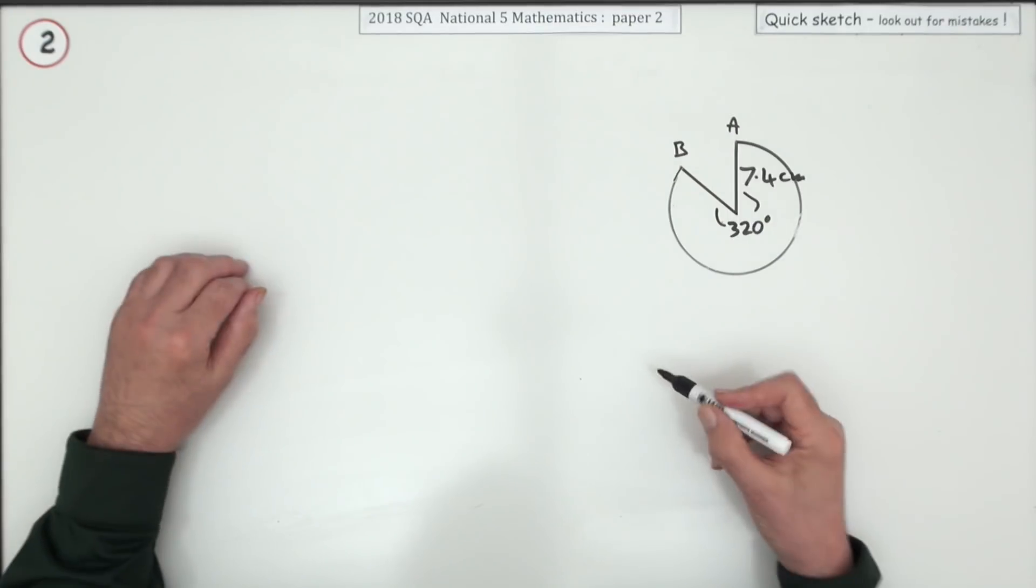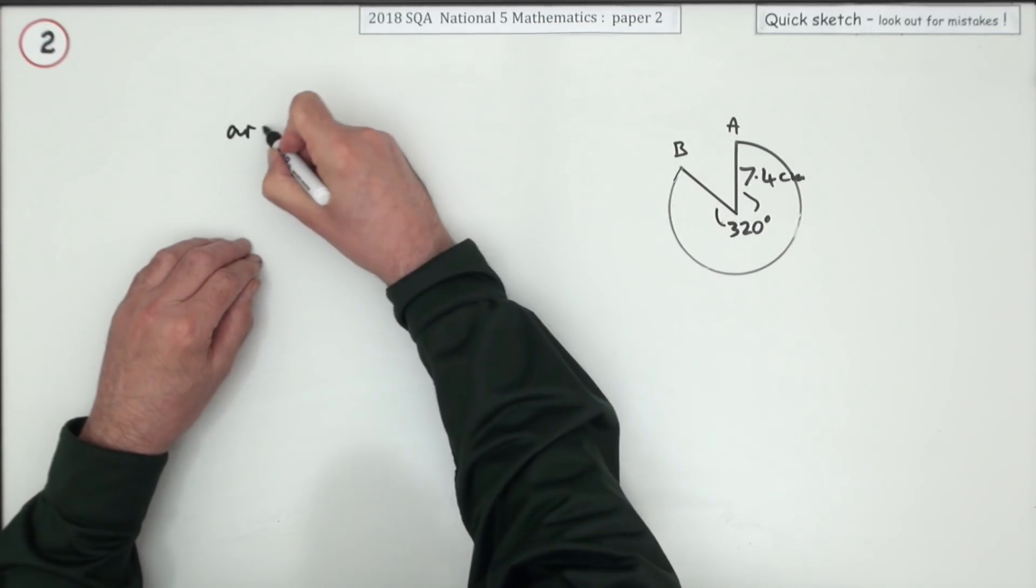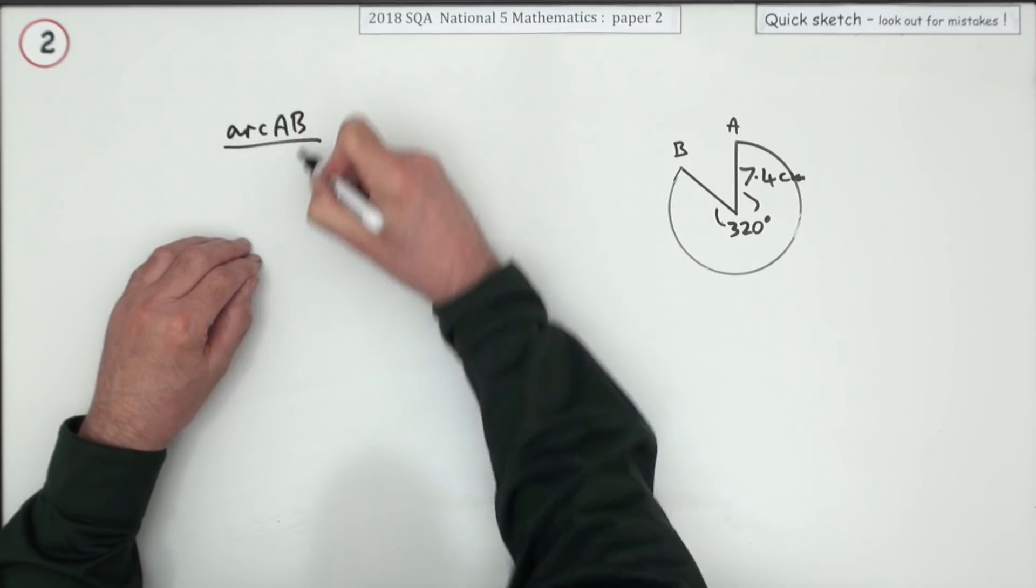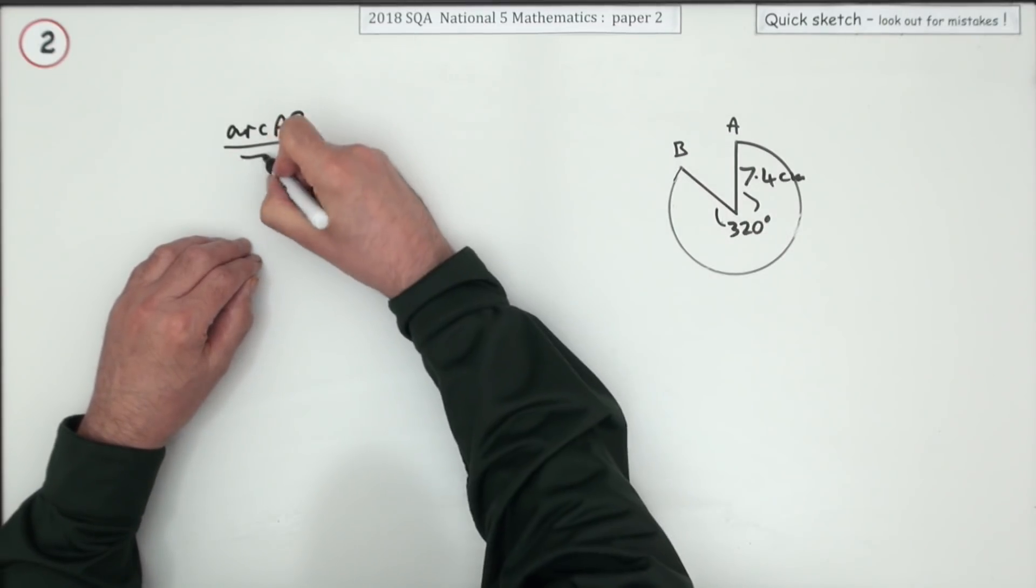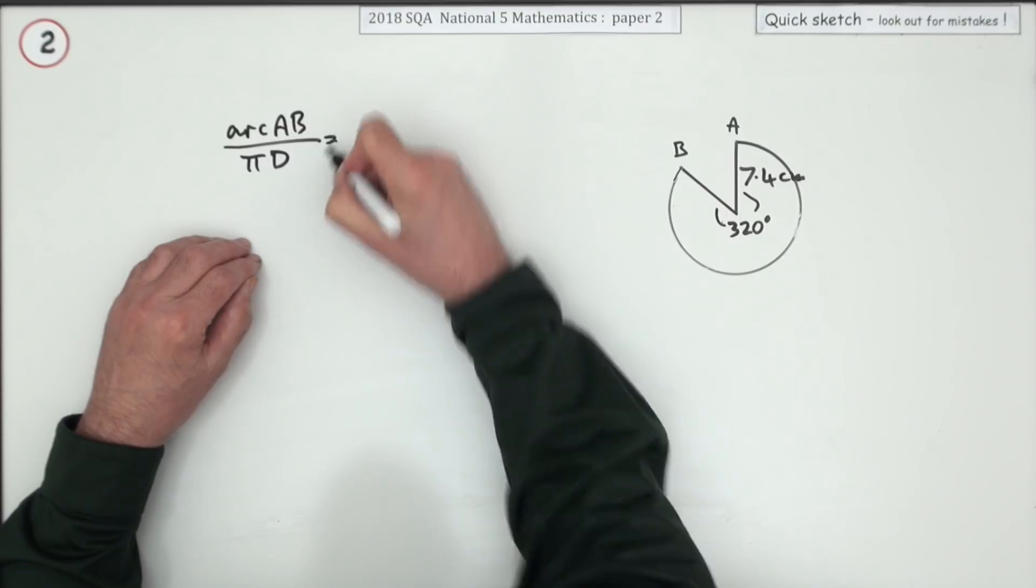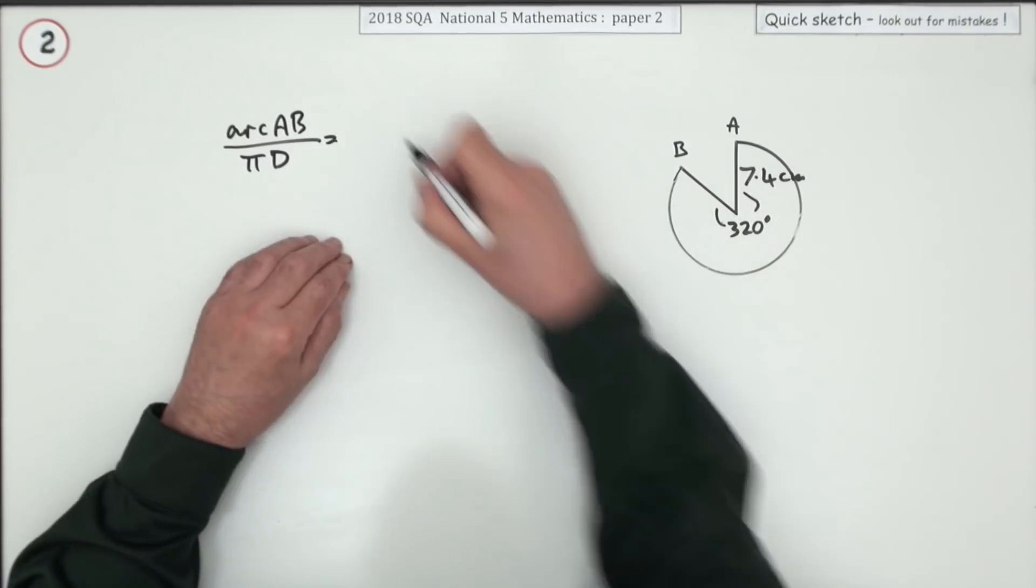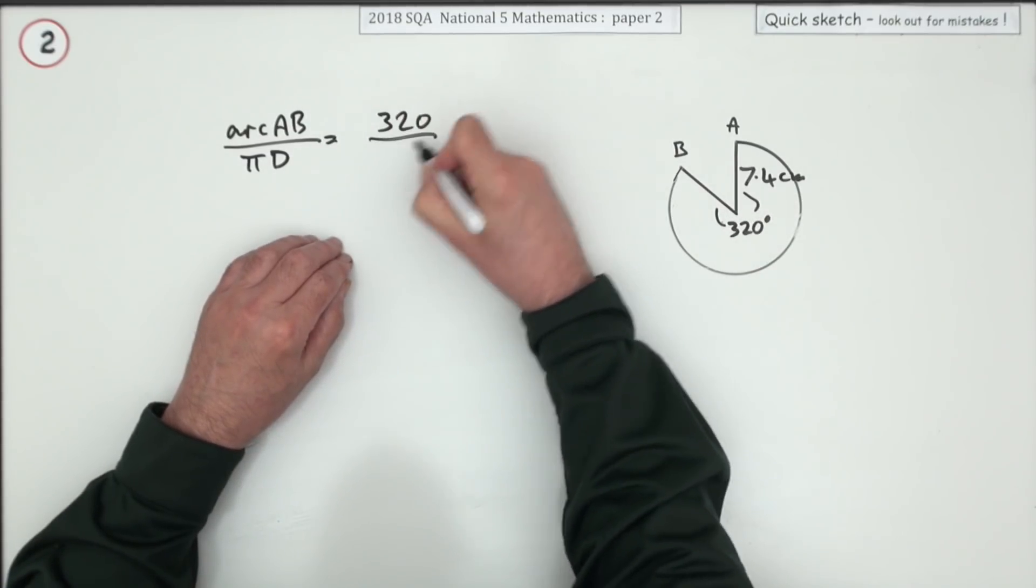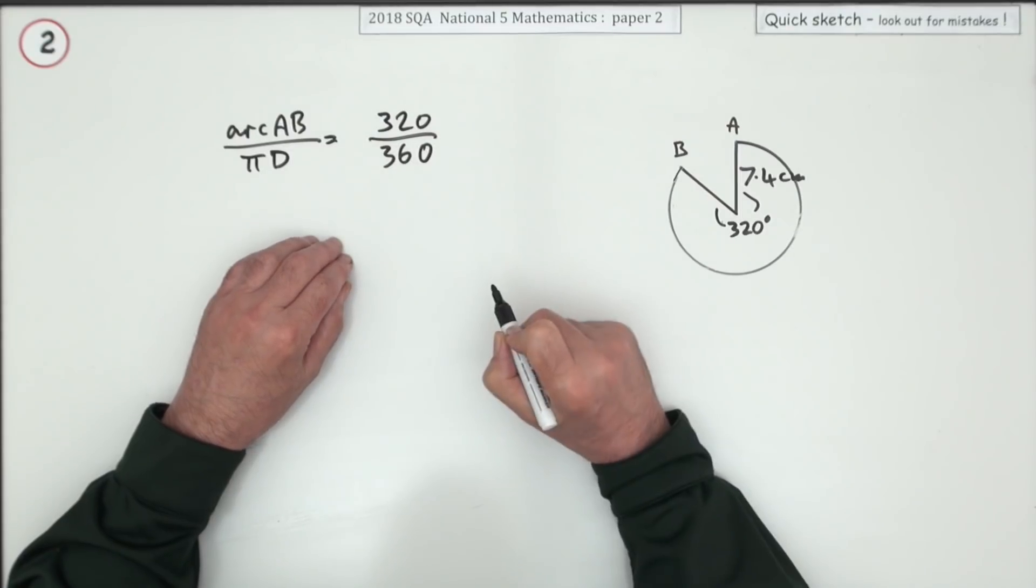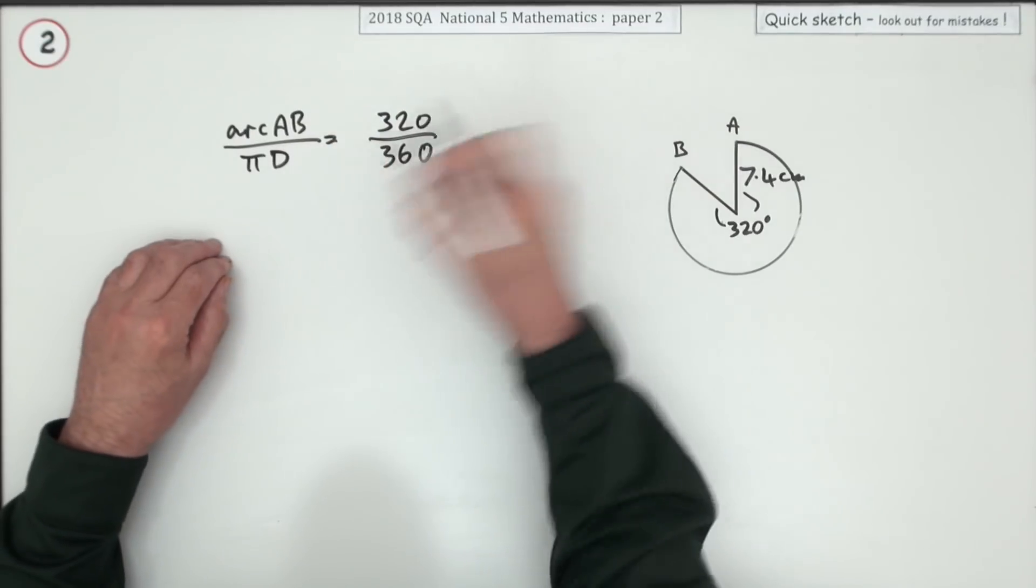Well it's just fractions isn't it? Whatever fraction arc AB is of the total arc which is the circumference. I'll put that down as pi D. That's the same fraction that the angle is, which is 320, out of the total angle 360. So what you've got to do is put that across.